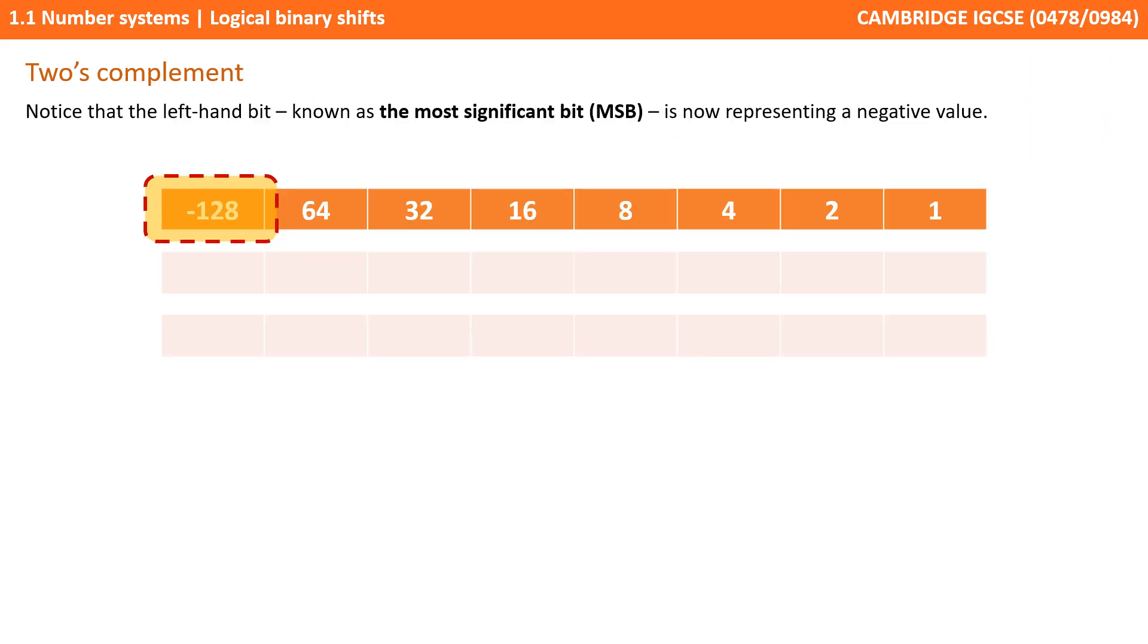Let's take a look at how this actually works. Here's our standard binary weighting line, starting with a 1 on the right hand side, and then doubling as we move left: 2, 4, 8, 16, etc.